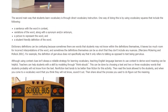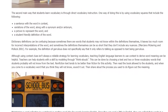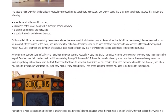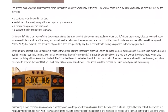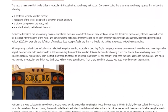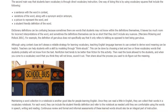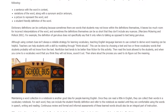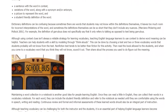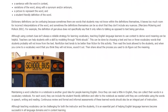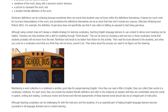This can be done by choosing a text and two or three vocabulary words that students probably will not know from the text. Non-fiction text tends to be better than fiction for this activity. Then read the book aloud to the students, and when you come to a vocabulary word that you think they will not know, sound it out. Then share aloud the process you used to figure out the meaning.